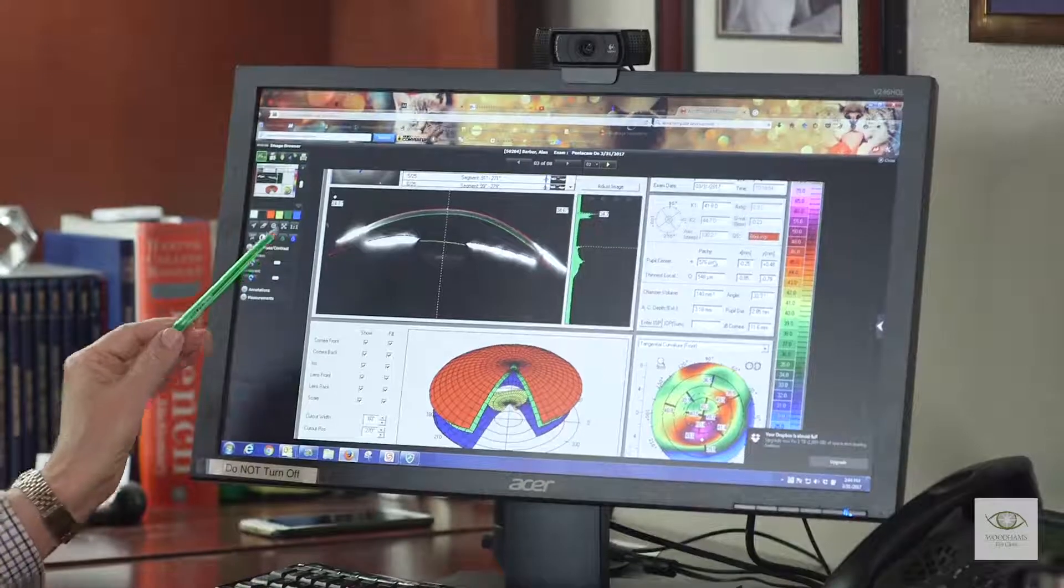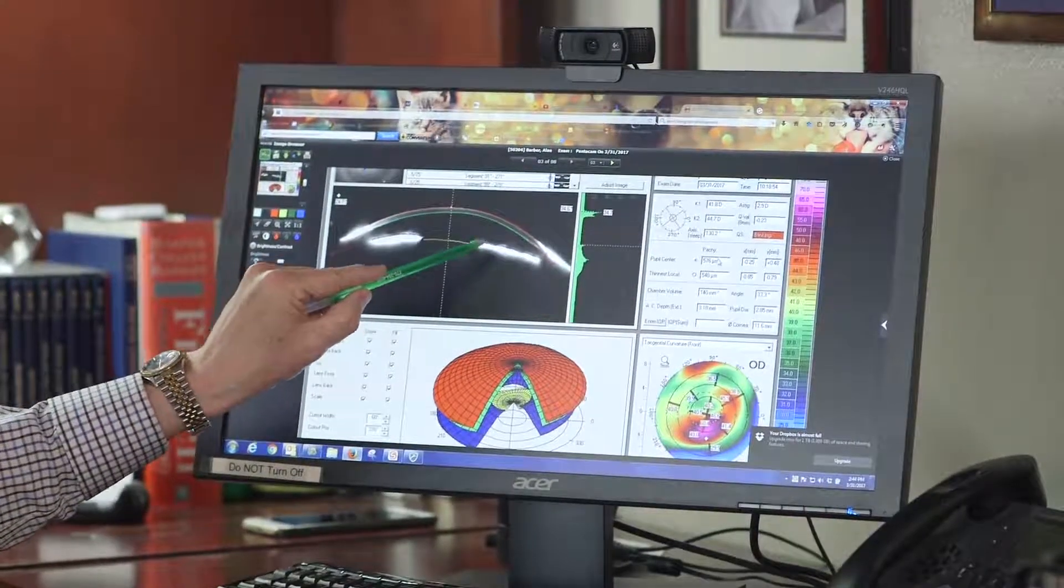Now if you had a cataract, the lens could look as white and as dense as that.